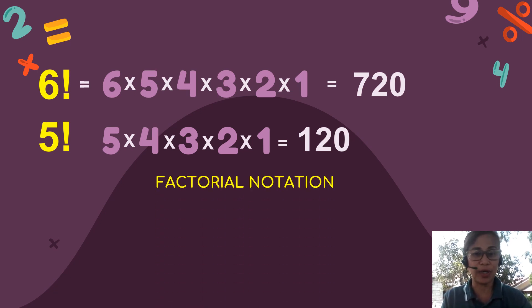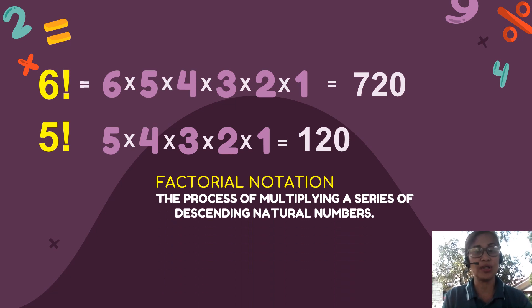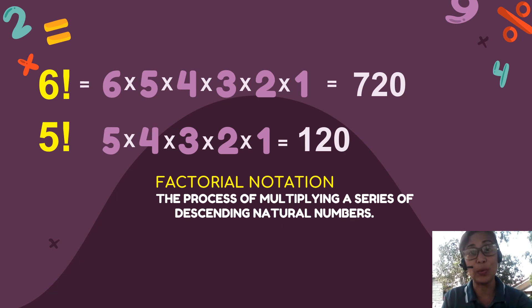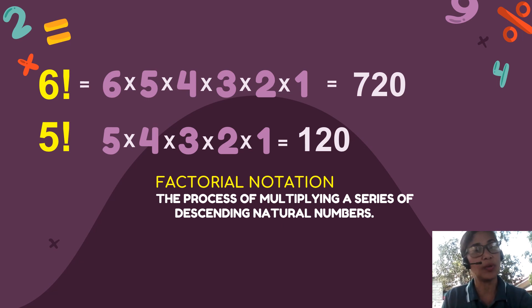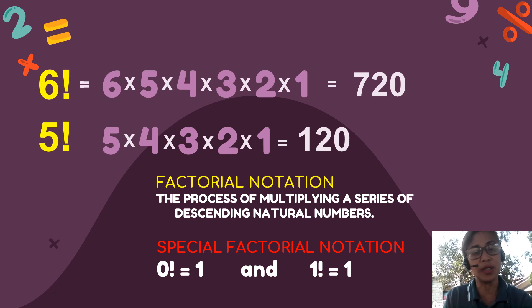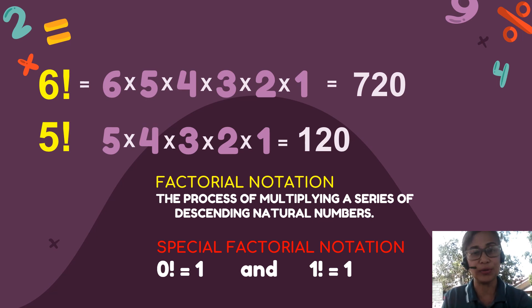They are called factorial notations, which is the process of multiplying a series of descending natural numbers only. But before we proceed with other related topics about factorial notations, please bear in mind that there are special factorial notations: 0 factorial is equal to 1, and 1 factorial is equal to 1.